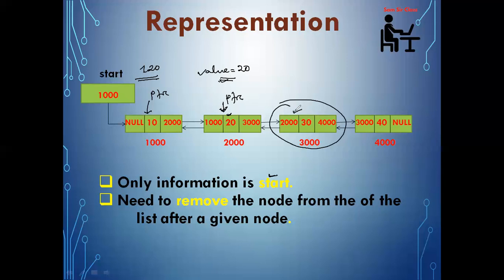So the loop stops when either ptr becomes null (node not present) or ptr info equals the value — meaning I got the node after which I want to delete. Once I find it, I'll use a variable temp which will be ptr->next, pointing to the node I actually want to delete, for example the node at address 3000.